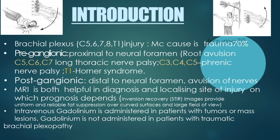The distinction between preganglionic and postganglionic lesions is of critical importance. Preganglionic lesions are located in the central nervous system, proximal to the dorsal root ganglion, where regeneration of neurons is absent. So the prognosis of preganglionic plexopathy is very grave. In contrast, postganglionic lesions are located beyond the dorsal nerve root ganglion in the peripheral nervous system, where regeneration of neurons is far better — so the prognosis of postganglionic plexopathies is far better than preganglionic ones.